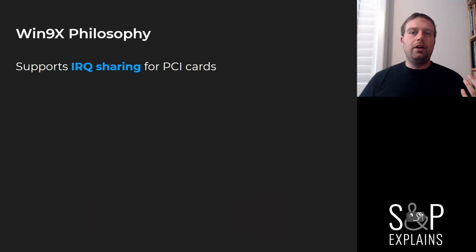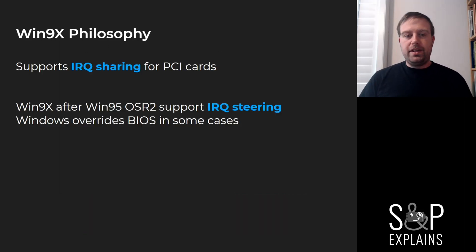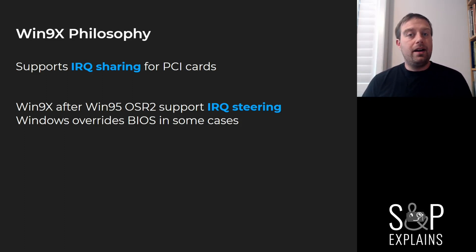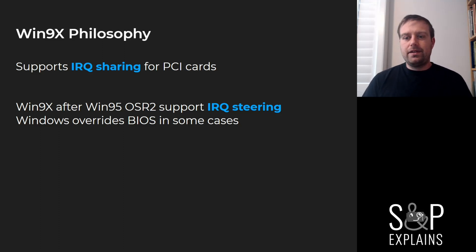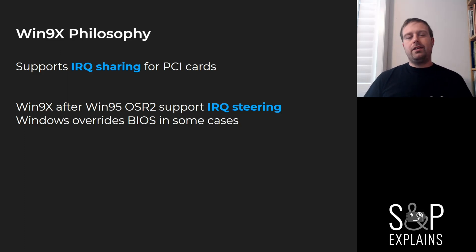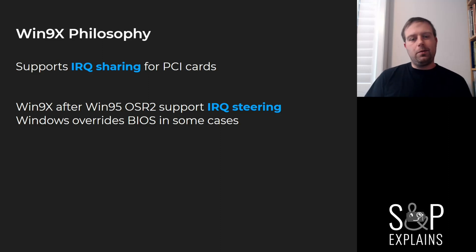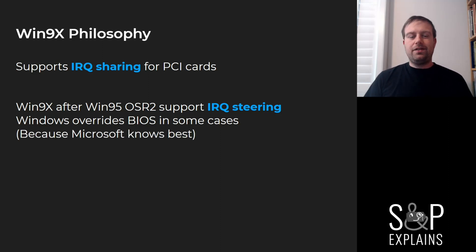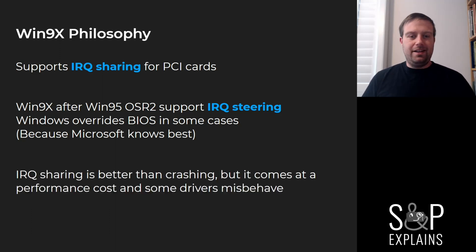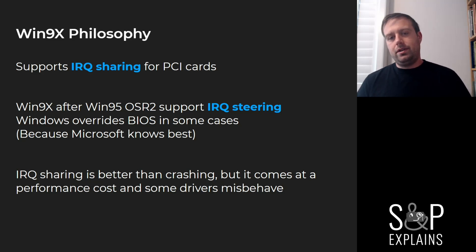Windows 9X supports IRQ sharing, but they also introduced more technology. As of Windows 95 OSR2, they support IRQ steering. This allows the Windows operating system to override the BIOS in cases where it can see there's already an ISA card on one IRQ and can move the PCI card somewhere else. This kind of goes to the philosophy that Microsoft knows best, which is how they felt in the late 90s. IRQ sharing is better than crashing, but there can be problems.